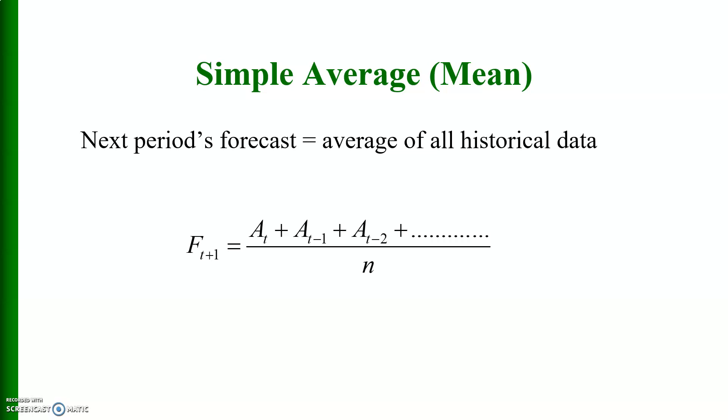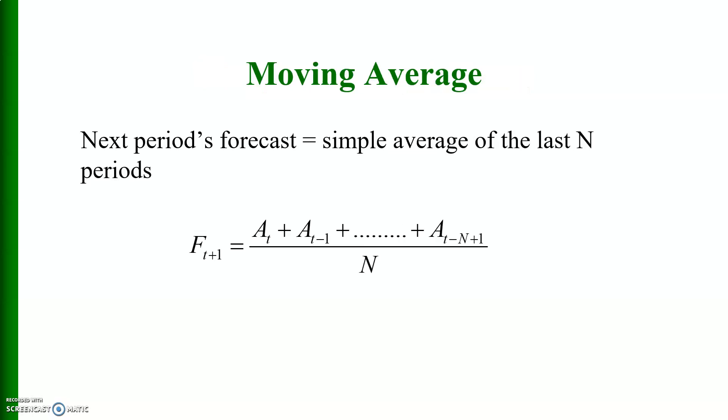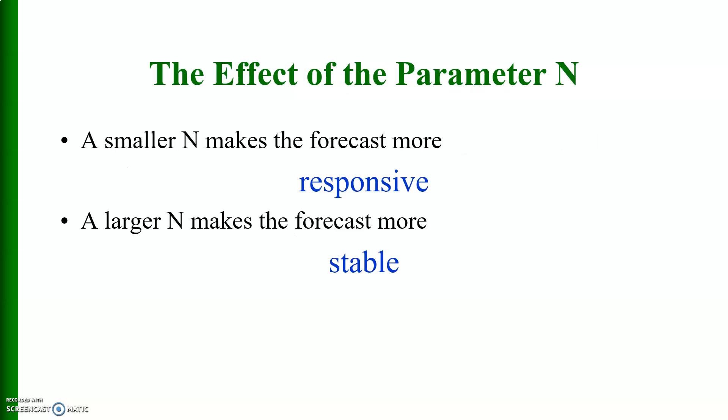This is the simple average if you take the average of all the historical data. And this is the moving average: the next period's forecast is equal to simple average of the last n periods. A smaller n makes the forecast more responsive, a larger n makes the forecast more stable.